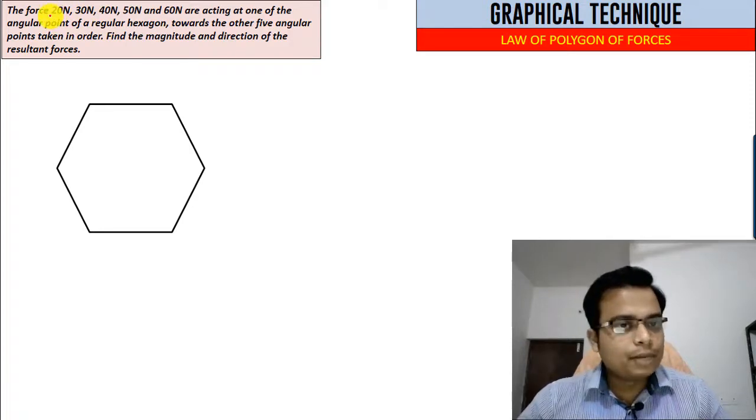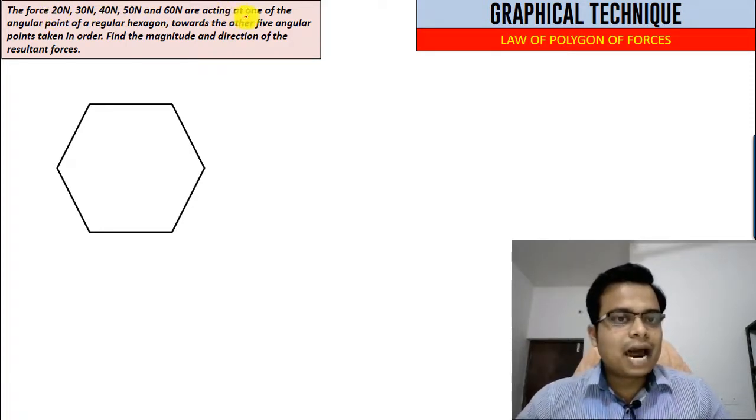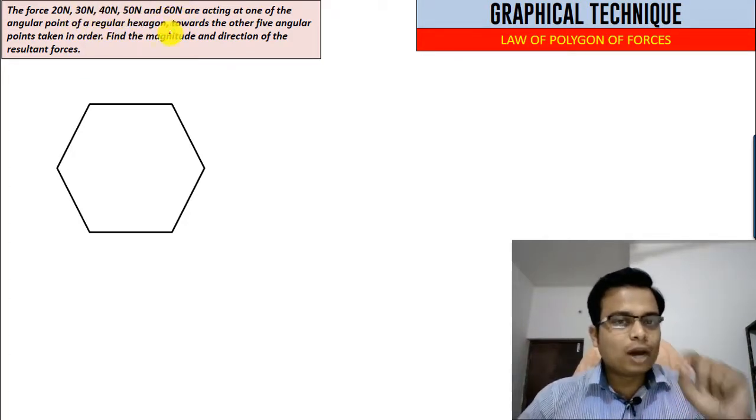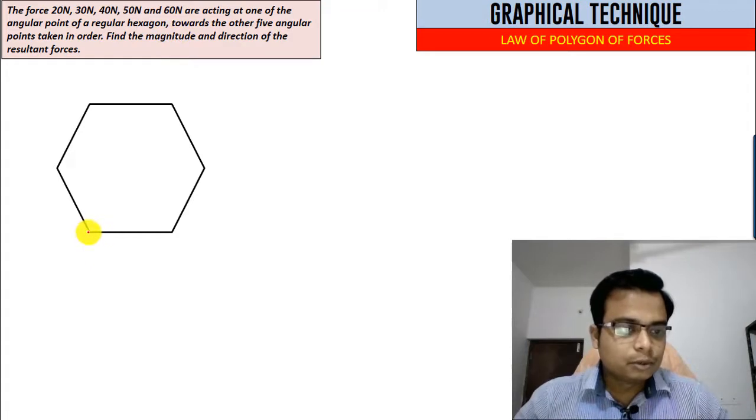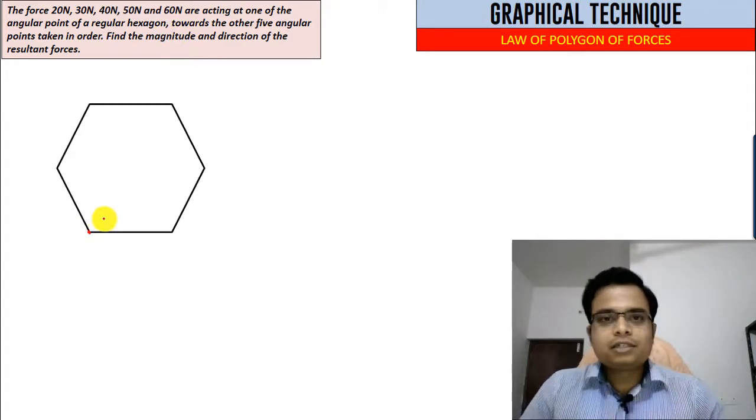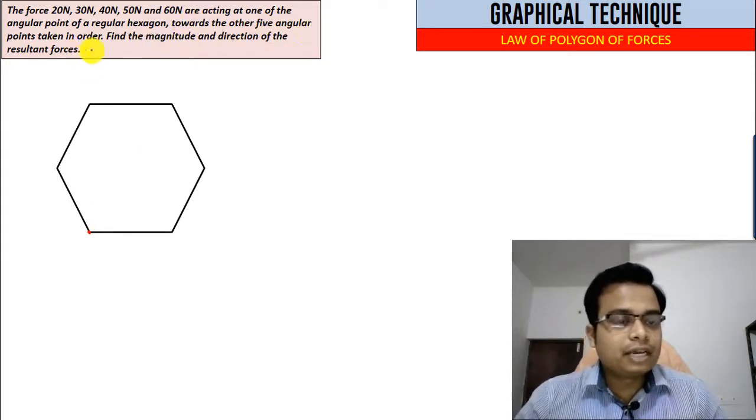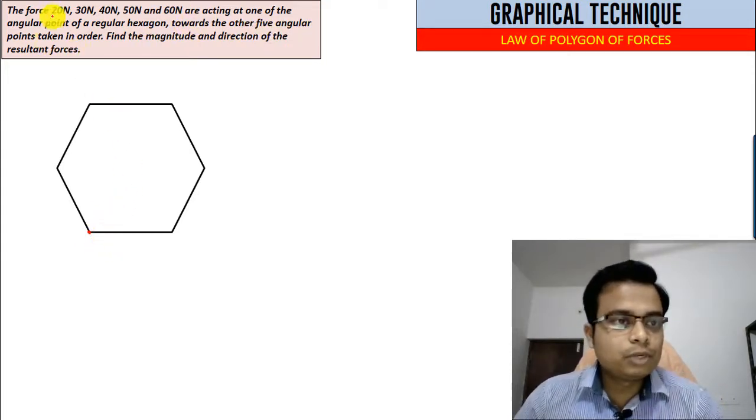There are a bunch of forces, five of them, acting at one of the angular points of a regular hexagon. So all these forces are acting on any one point of a regular hexagon. All these sides are equal, towards the other five angular points taken in order.